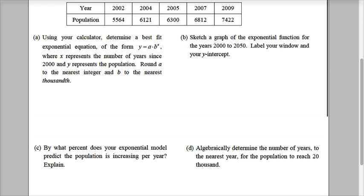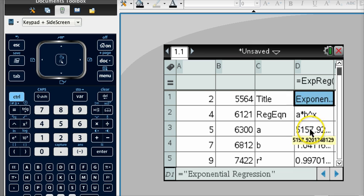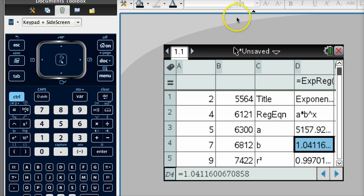So if I was to come back here, round those answers that I just did, I would get y is equal to 5158, because it says round A to the nearest integer. And then B is 1.041 to the x power. So I'm rounding this to the nearest whole number. And then I'm rounding this to the nearest thousands.